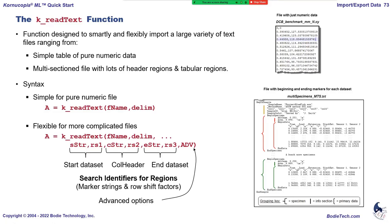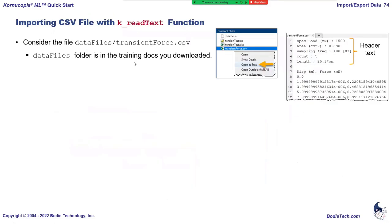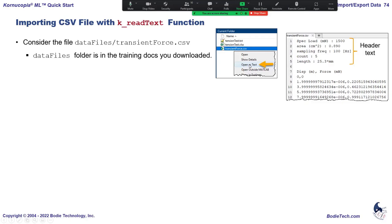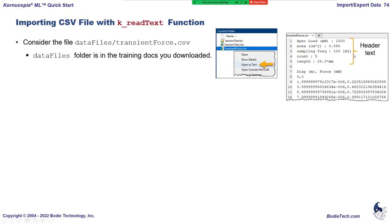I'm going to demonstrate a couple examples now. We have a CSV file called transient force, provided in the data files for the course. Since it's a CSV file, to view it in its native form in MATLAB, you right-click and choose 'open as text' rather than clicking open — which would launch the import wizard. With 'open as text,' it opens in the editor showing its true native form. Here I can see some header text at the top.